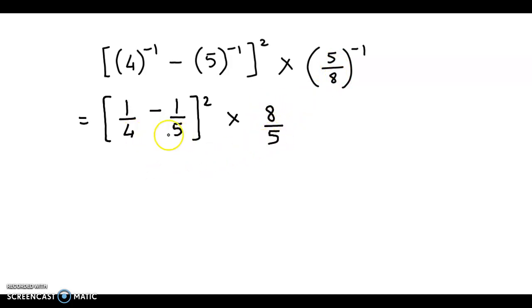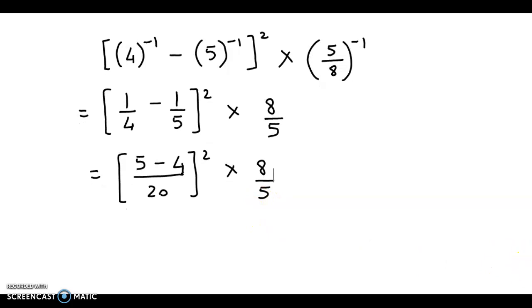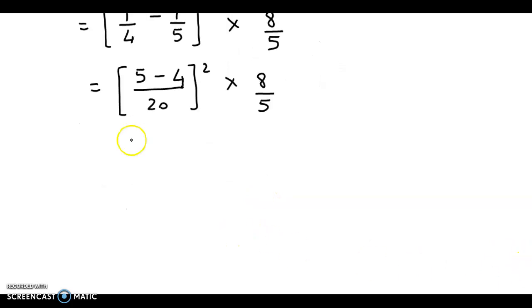Next we equalize the denominator. So we obtain 5 minus 4 upon 20, the whole square, into 8 by 5. Then 5 minus 4 gives us 1, so we have 1 by 20 the whole square into 8 by 5.